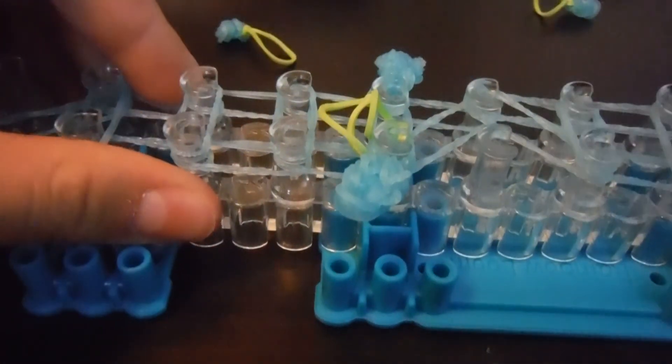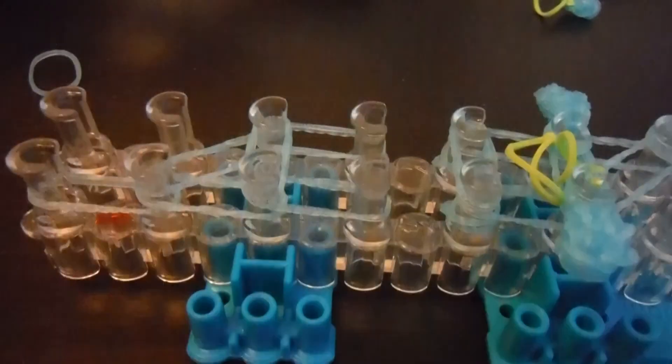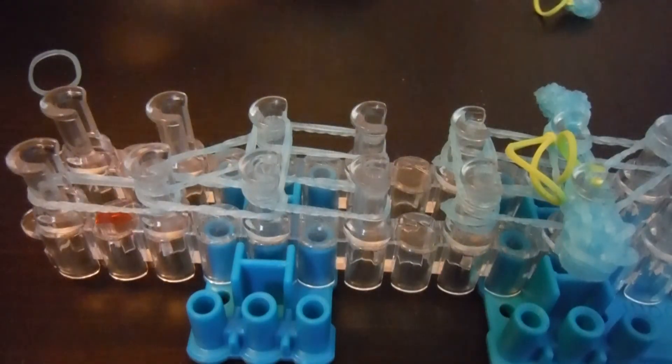Take off the, this double looped band, second to last horizontal one, and then take off the two double looped bands going to that peg.